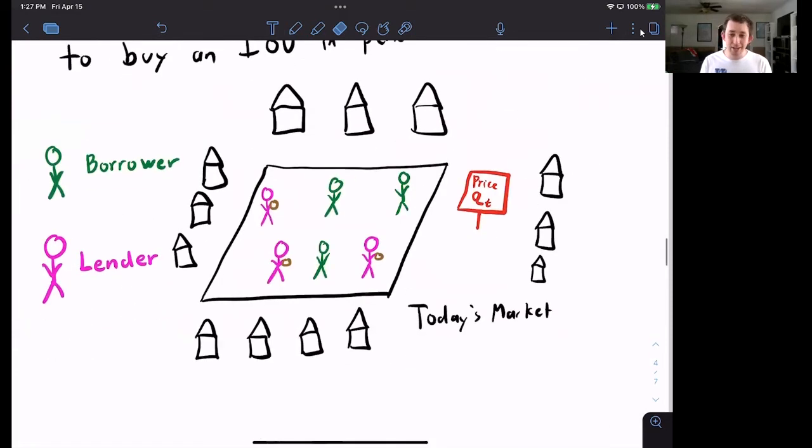So here's a picture that I like to keep in my head of this market. You have borrowers in green and lenders in purple. And each of the lenders have a coconut that they are willing to sell the borrowers today in exchange for the borrower paying them a coconut tomorrow. And there is a price Q_t in this market. And this happens every single day.